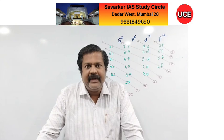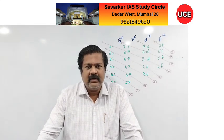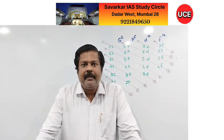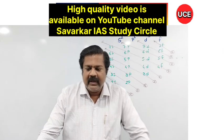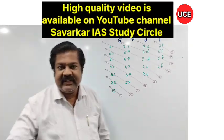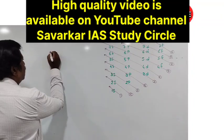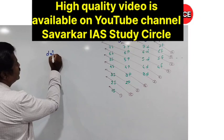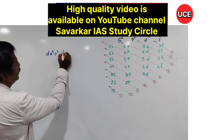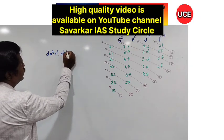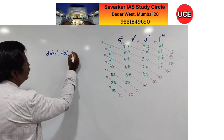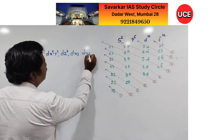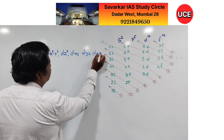For S orbital, such splitting is not applicable. For P orbital, it splits into Px, Py, Pz. If the orbital is D, then it splits into Dx²-y², Dz², Dxy, Dyz, Dxz.